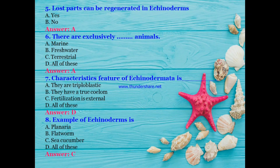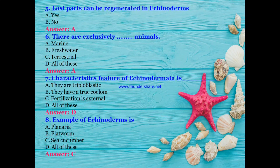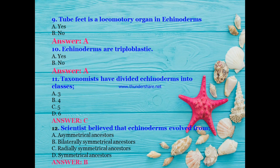Echinoderms are exclusively what type of animals — marine, freshwater, terrestrial, or all of these? The answer is A — marine animals. Characteristic features of Echinodermata: they are triploblastic, they have a true coelom, fertilization is external — or all of these? The answer is D — all of these. An example of an echinoderm is: Planaria, flatworm, sea cucumber, or all of these? The answer is all of these.